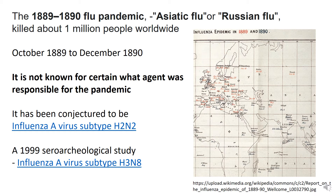Today I'd like to talk about a pandemic that occurred in the late 1800s. This pandemic has been termed the Russian flu or the Asiatic flu. It started in St. Petersburg, Russia in towards the fall of 1889 and eventually killed about a million people worldwide. It's still not known for certain what the agent was responsible for this pandemic, although it's widely accepted that it was influenza.